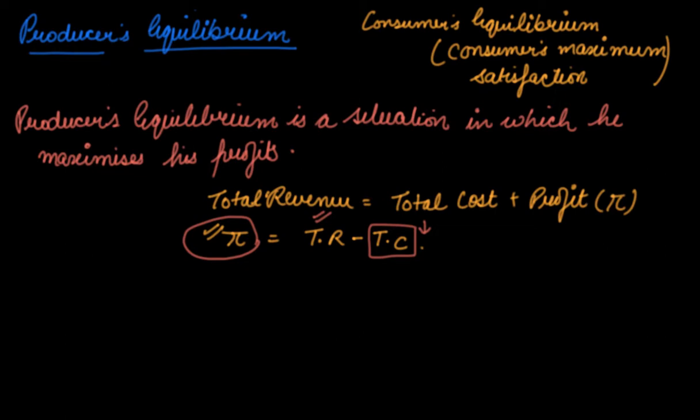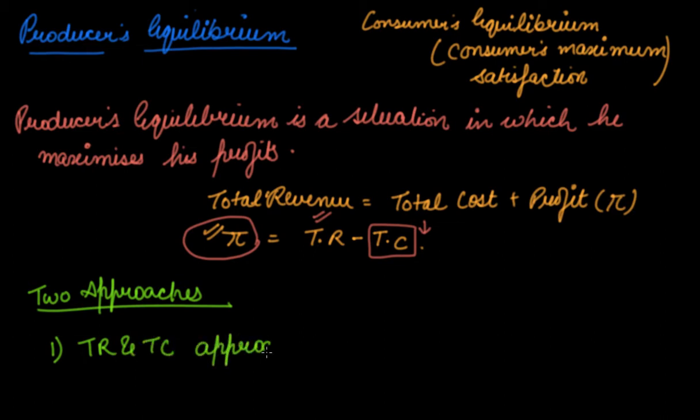In this, we will study two approaches to find out producer equilibrium. The first approach is TR and TC approach. You know what is your TR, you know what is your TC. We have done this completely in our previous videos - total revenue and total cost approach. The second one is MR and MC approach.